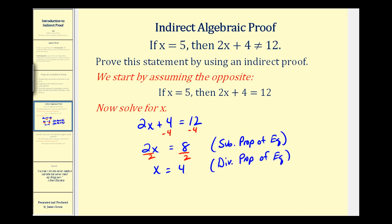And x equals four contradicts our assumption that if x equals five, 2x + 4 equals twelve. And this is the key to an indirect proof. Once we reach the contradiction, we can state that our assumption is false, therefore the original statement must be true.